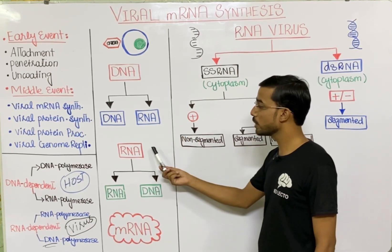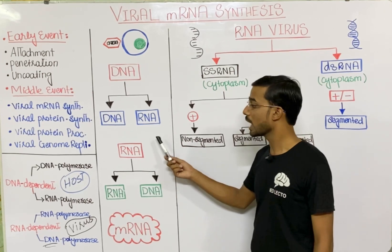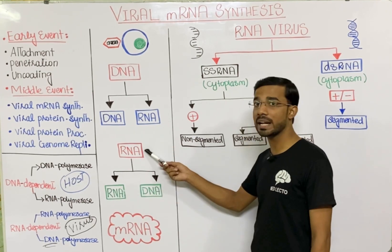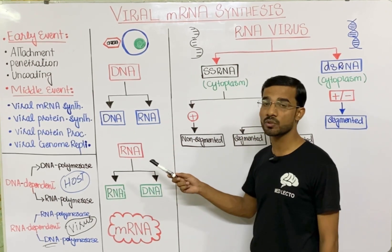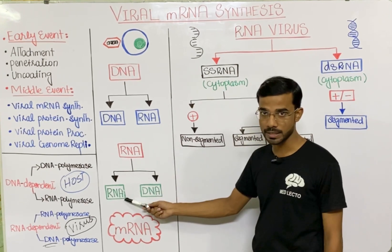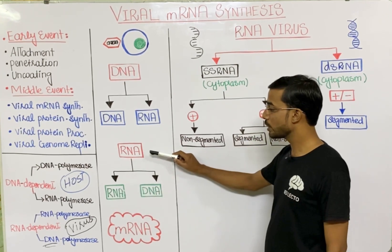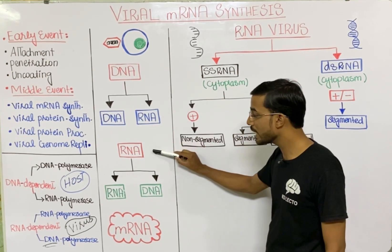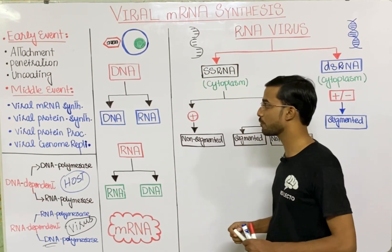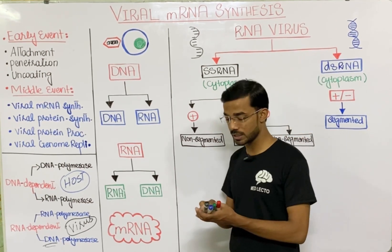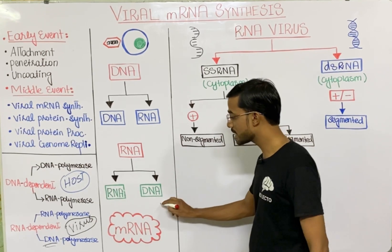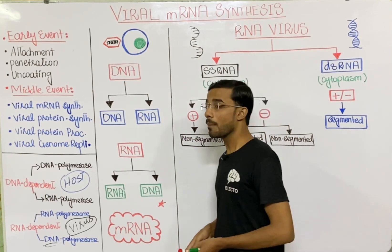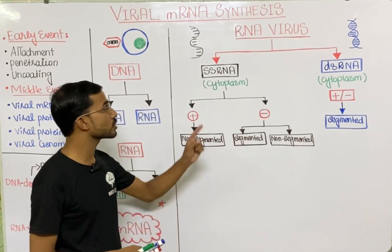Similarly, when you talk about RNA, it again can form two things: RNA can form RNA, or RNA can form DNA. When you see the formation of RNA from RNA, it requires RNA dependent RNA polymerase. When you see the formation of DNA from RNA, it requires RNA dependent DNA polymerase. Ultimately our main focus is on the synthesis of messenger RNA, specifically viral messenger RNA, and in this lecture we focus on RNA viruses.